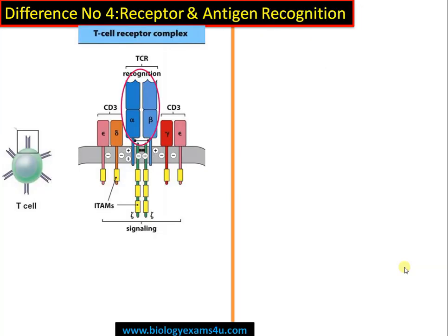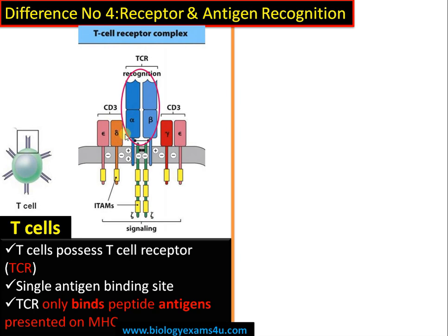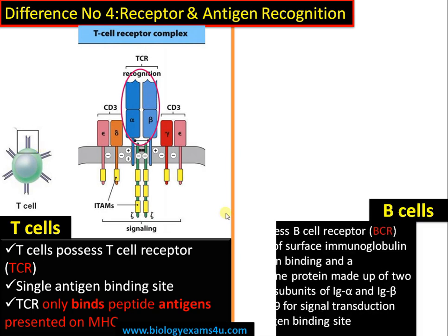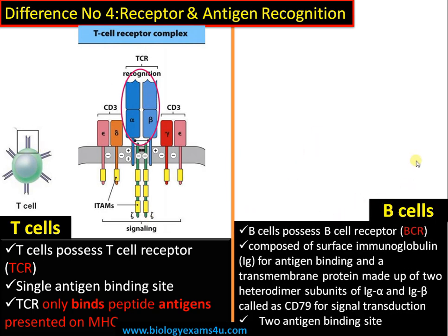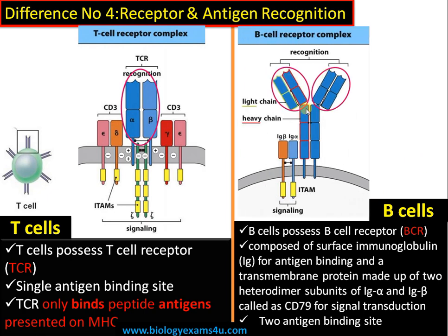Difference number four regarding receptors and antigen recognition: T cells have a receptor called the T cell receptor or TCR, which has a single antigen binding site and only binds to peptide antigens presented on MHCs. B cells have a receptor called the B cell receptor or BCR, composed of a surface immunoglobulin with two antigen binding sites and a transmembrane protein made up of heterodimer units of Ig-alpha and Ig-beta involved in signal transduction. In short, TCR has a single antigen binding site and BCR has two antigen binding sites.